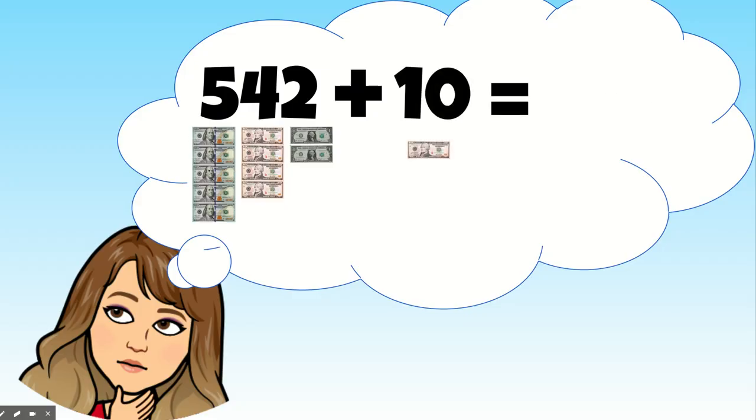542 plus 10 equals what? Here's 542 plus 10. Well, there's 1, 2, 3, 4, 500, 10, 20, 30, 40, 50, 51, 52. So 542 plus 10 is 552.